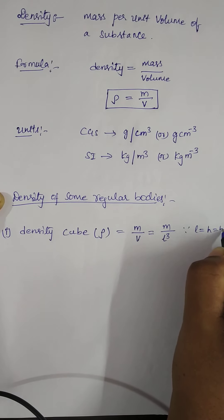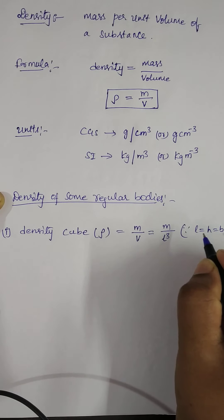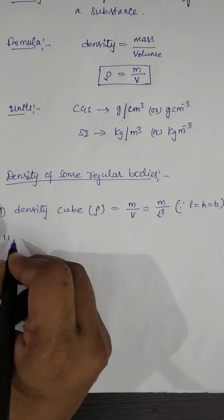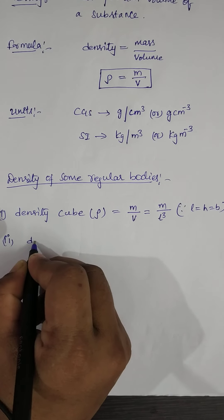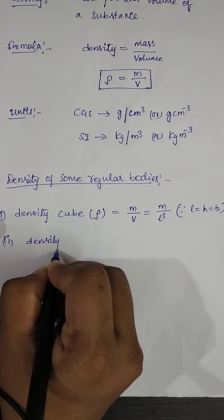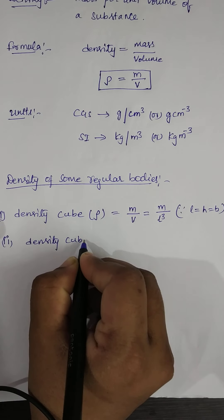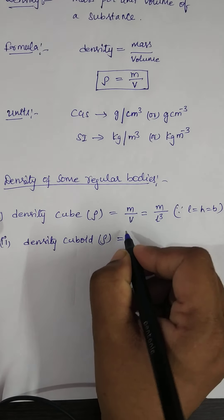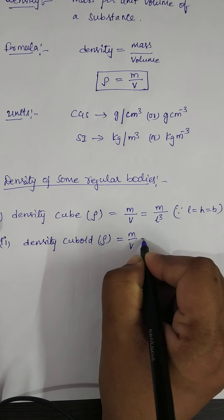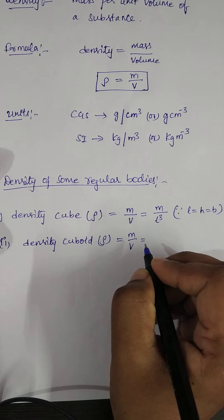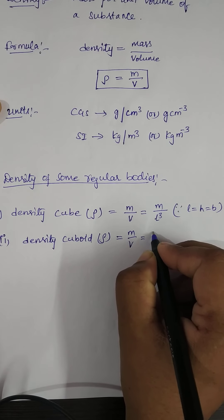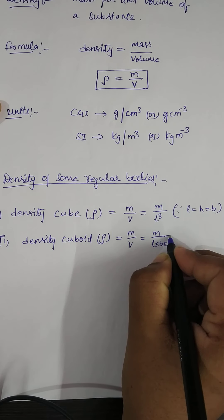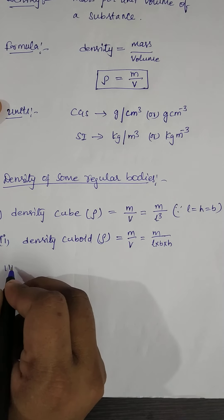For a cube, l equals h equals b, meaning all sides are equal. The second example is the density of a cuboid, which is mass per unit volume. Mass can be found using the physical balance, and volume by the formula: length multiplied by breadth multiplied by height.